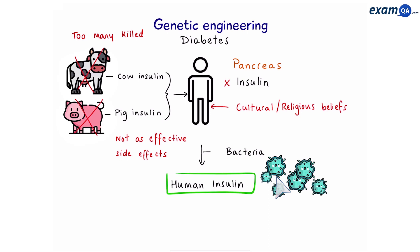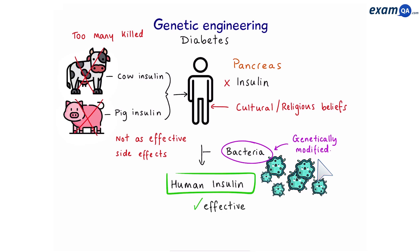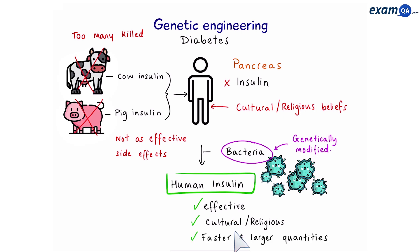Lots and lots of bacteria. Now, these bacteria are not just standard bacteria — they're going to be genetically modified. So when they produce human insulin, that means it's going to be effective, will not clash with people's culture or religion, and because bacteria grow quickly, we can produce enough insulin to treat everyone on the planet who has diabetes.